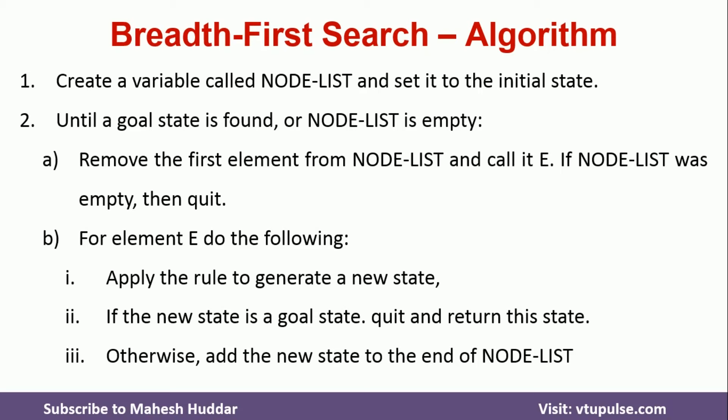Now the node list contains B and C. We select the first one, B, and find the successors of B. The successors of B are D and E. We remove B and add D and E to the node list. B has been reached, and D and E are its successors — we have just obtained the successors of B.